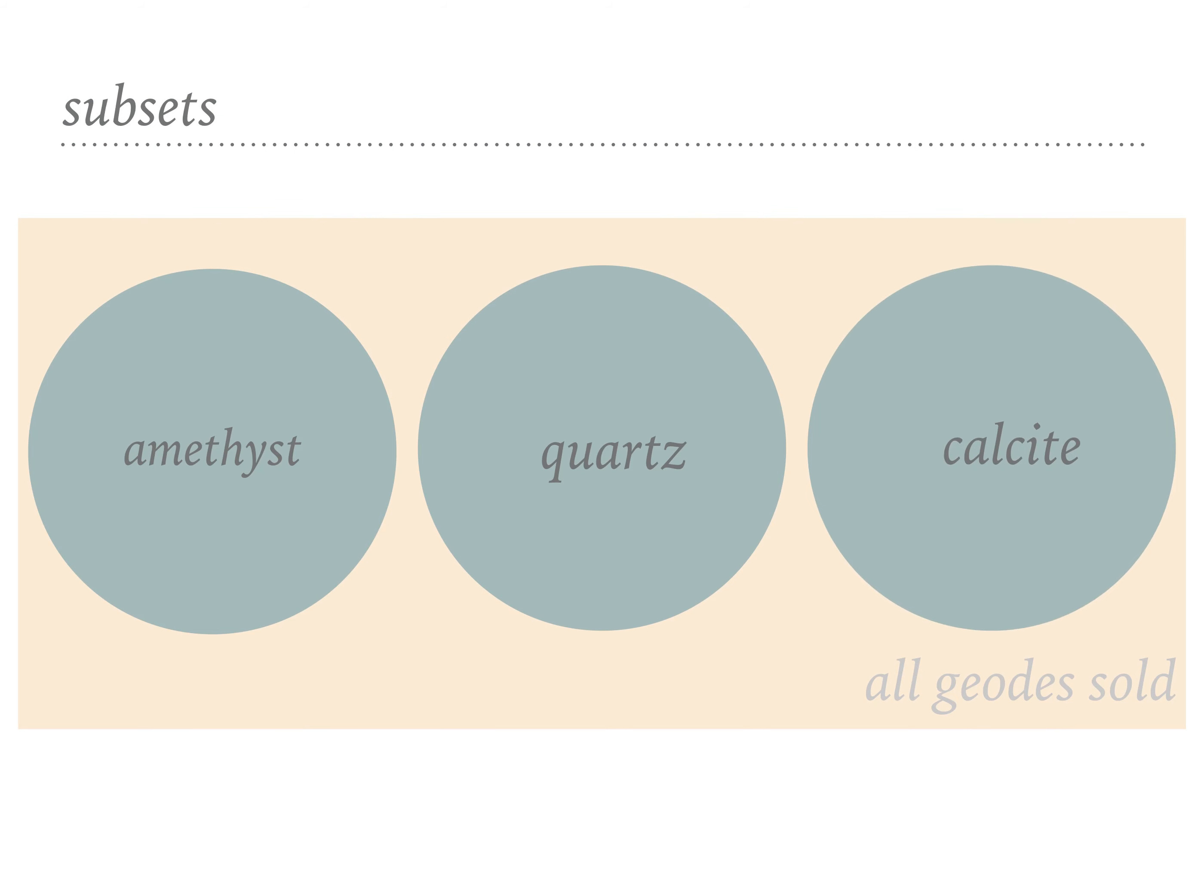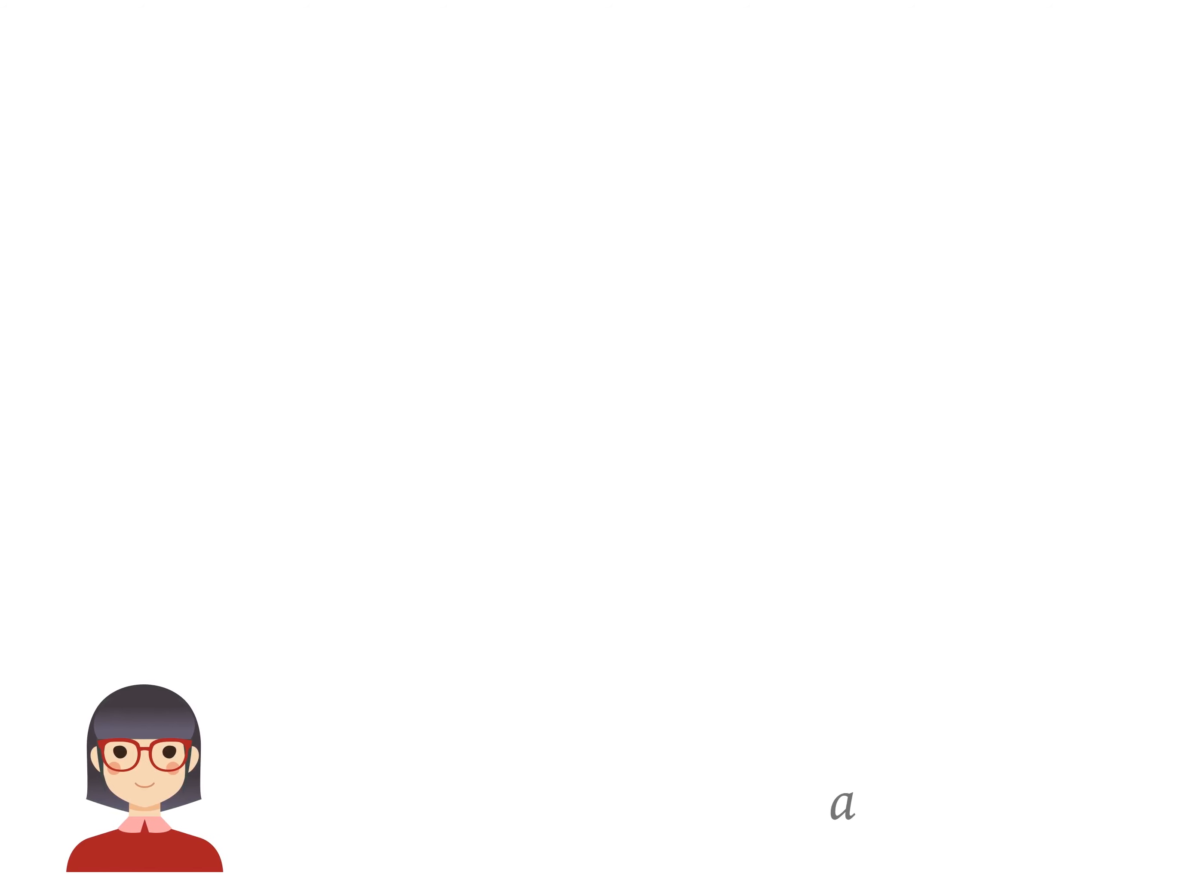We can think of the amethyst geodes sold, quartz geodes sold, and calcite geodes sold as each being subsets of the set all geodes Target sold last year. To translate this into a math problem, we first need to assign variables to the things that we're talking about. In mathematics, it's common to use capital letters to represent sets.